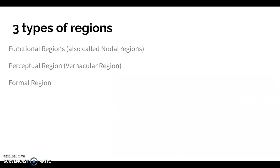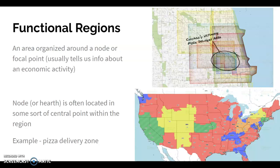There are three different types of regions we'll study in class. The first is a functional region — an area organized around a specific economic activity or a focal point called a node. The easiest way to understand a functional region is to think of a pizza place that delivers: the node or focal point is the store, and the delivery zone around it is the functional region. Functional regions are centered around a specific hearth, node, or central point.